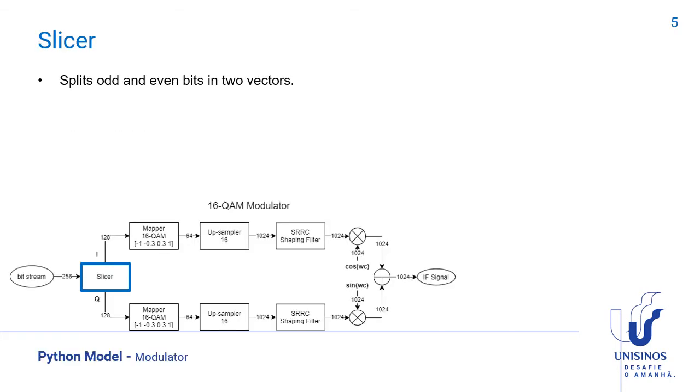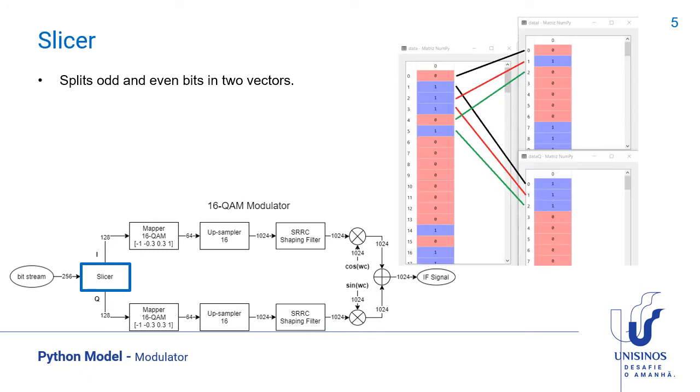The first block of the modulator is the slicer. It separates the odd and even bits in two vectors. Even bits are in the in-phase vector and the odd bits in the quadrature vector. We can treat these two vectors in parallel through the modulator.